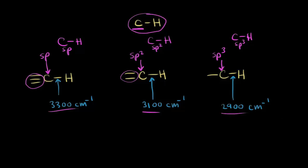We need to think about the hybridization. The sp-hybridized carbon has two sp-hybrid orbitals, and an sp-hybrid orbital has the most s-character — 50% s-character, if you remember from the videos on hybridization. For an sp-2 hybridized orbital, it's about 33% s-character. And for an sp-3 hybridized orbital, it's about 25% s-character.